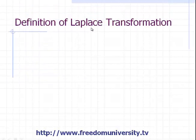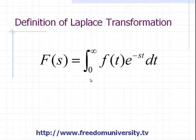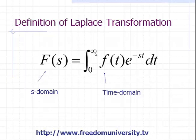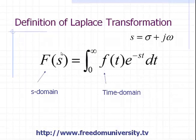Let's start with the Laplace transform definition. The Laplace transform takes a time domain signal and converts it into the Laplace domain or S domain. We integrate from zero to infinity, taking the function f(t) in the time domain where t is a real-valued time variable, multiplying by the complex exponential e^(−st), and integrating from zero to infinity. The result is F(s), which describes f(t) in the Laplace domain. Here, s is a complex number consisting of a real part sigma plus j omega, so it converts a real-valued function into a function described in the Laplace domain.